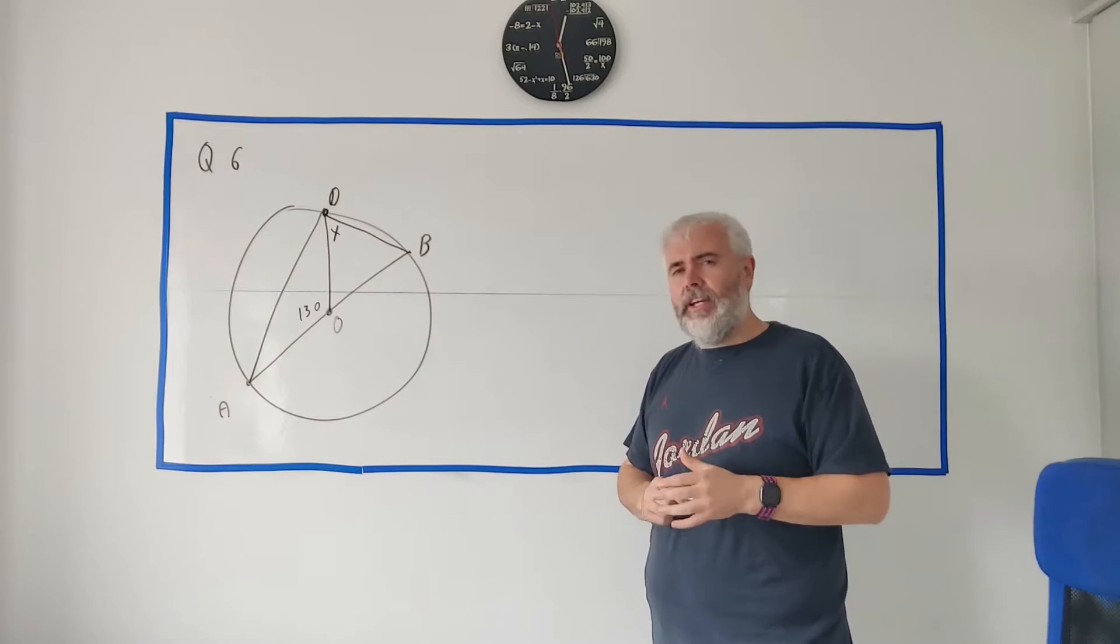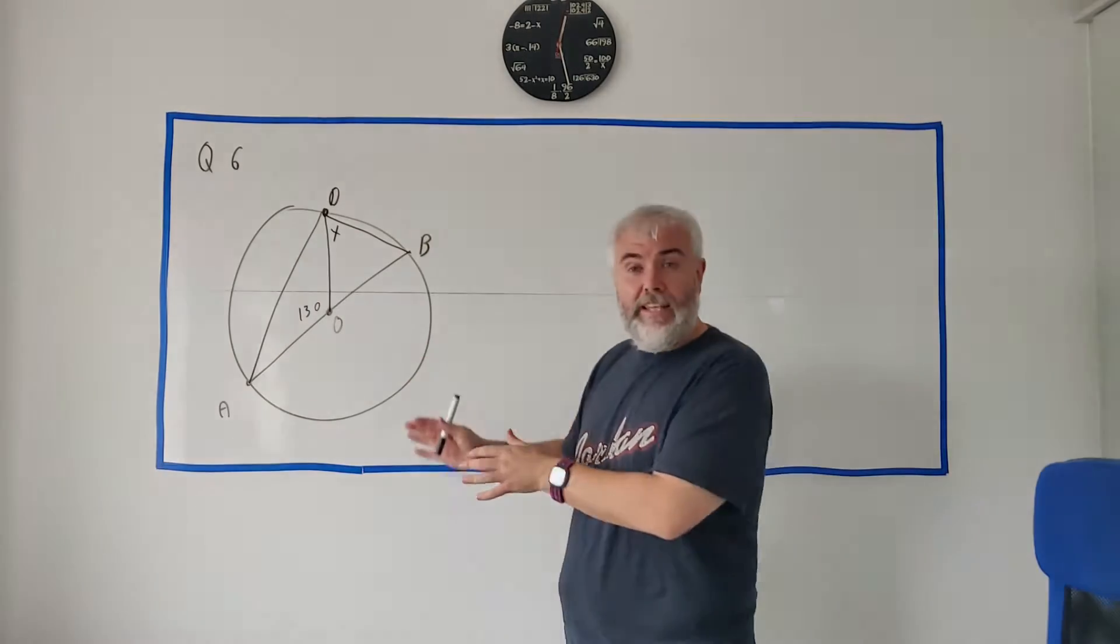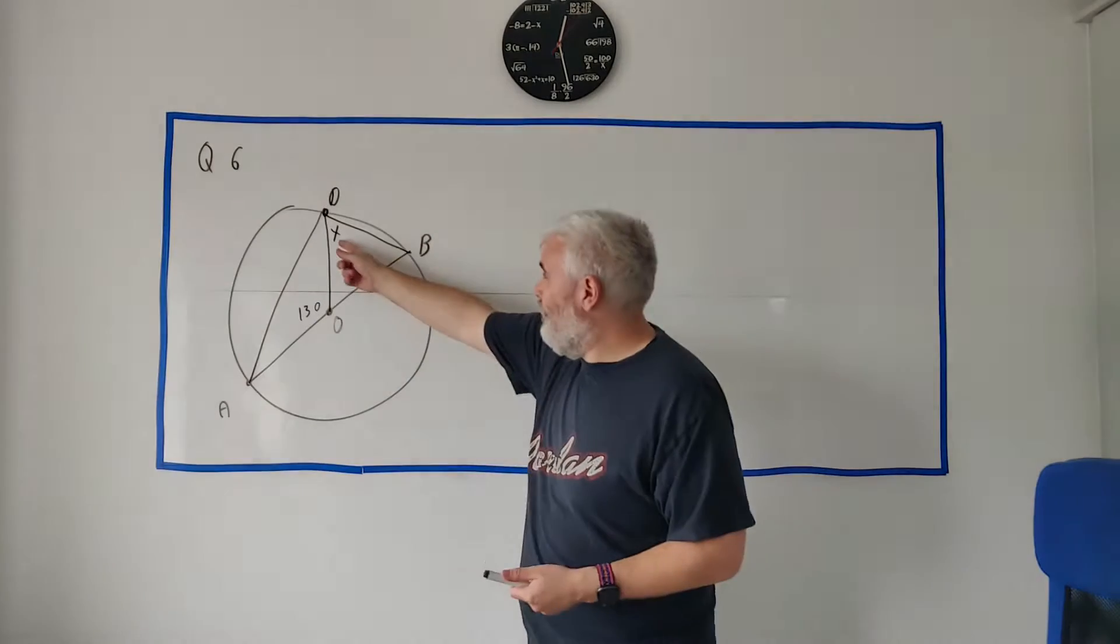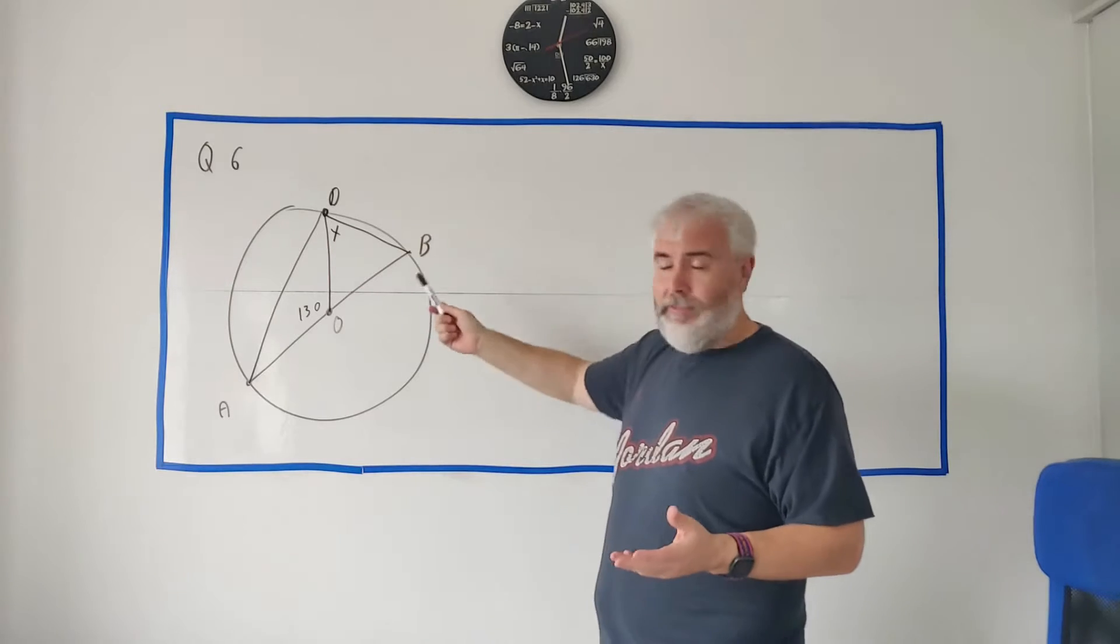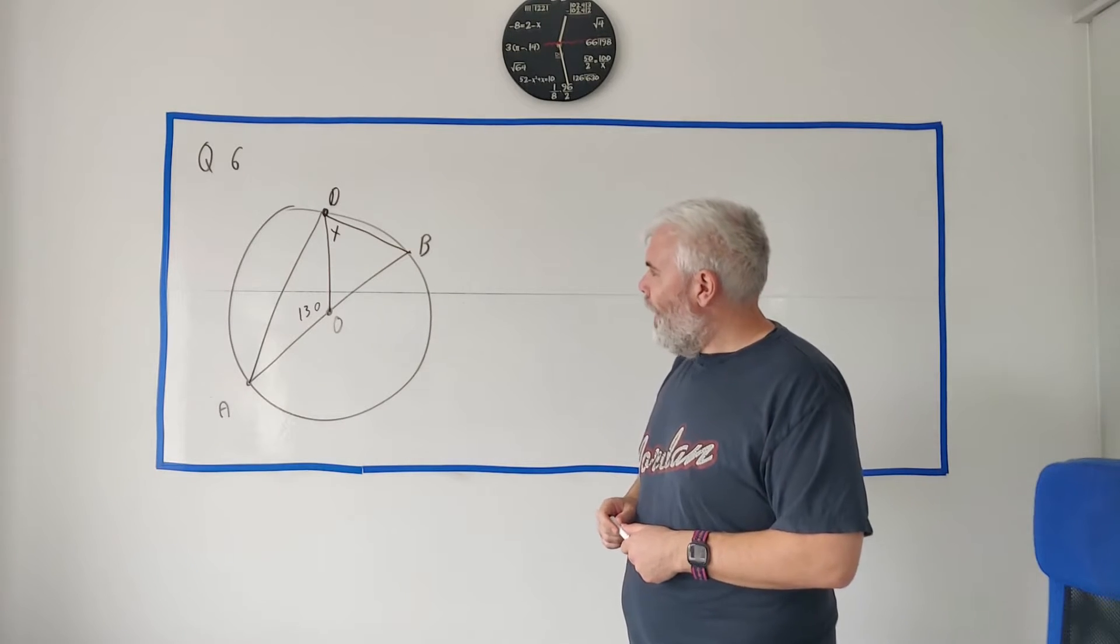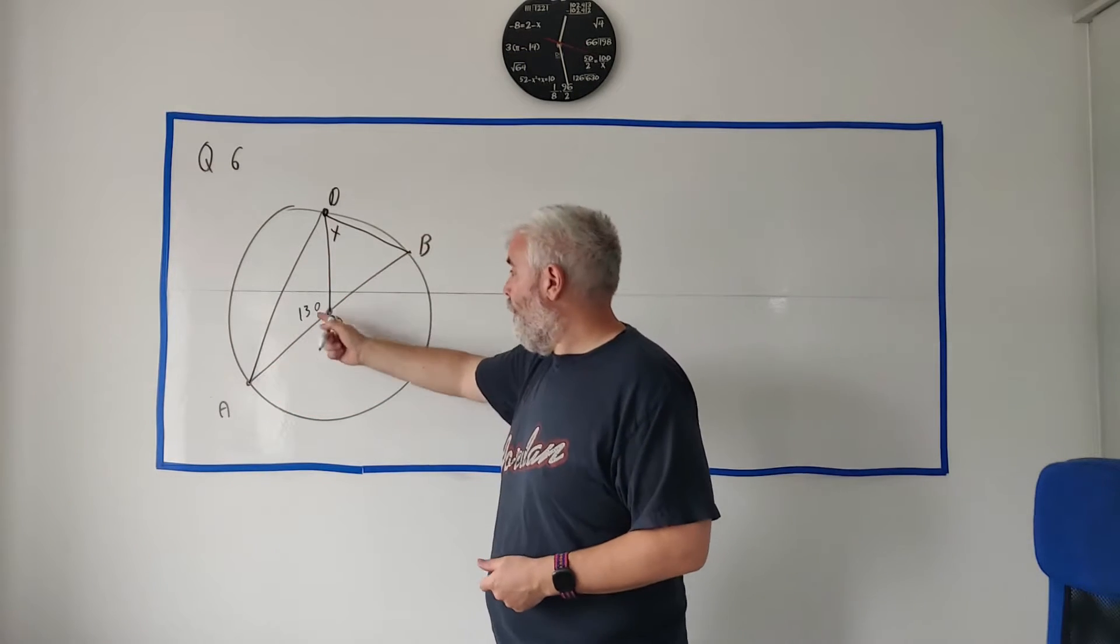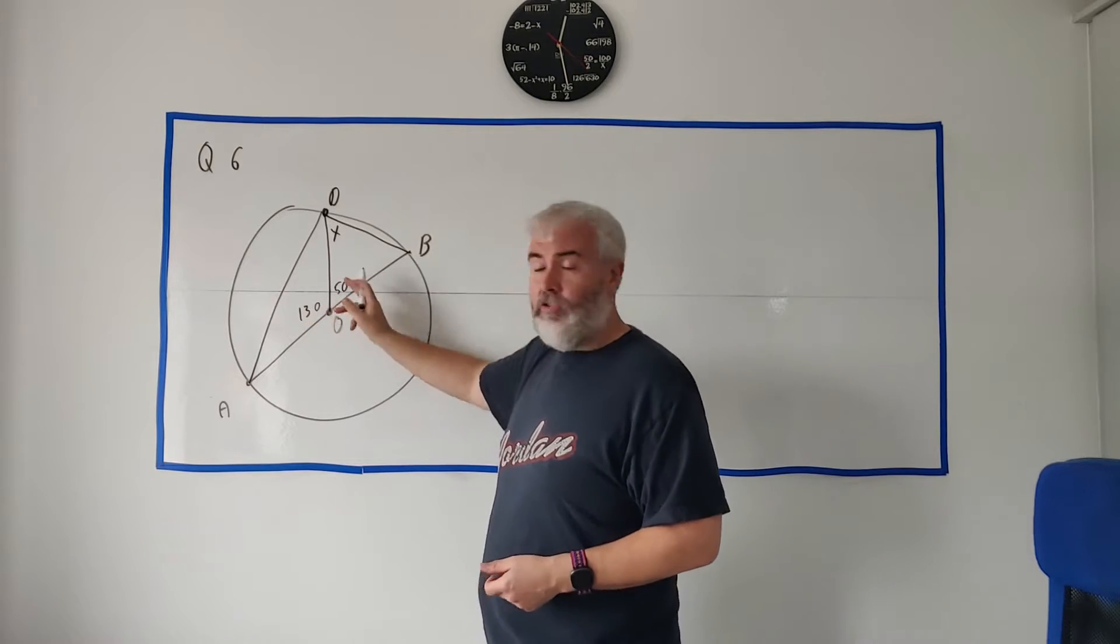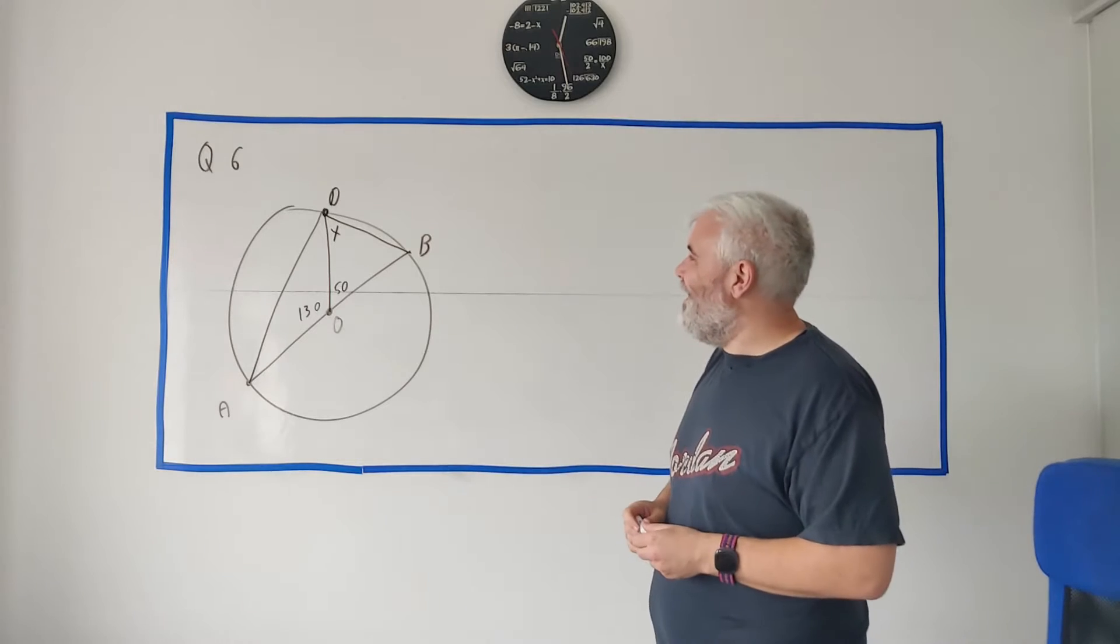One thing I like to do before I even answer the question is I have a look and see if there's anything simple I can fill in. They're probably going to ask me what x is, definitely, but I might be able to find some of the other numbers quite easily. And then one that stands out to me is the diameter here, it's a straight line. That's 130, well this must be 50. A straight line has to add up to 180, I'm sorry.